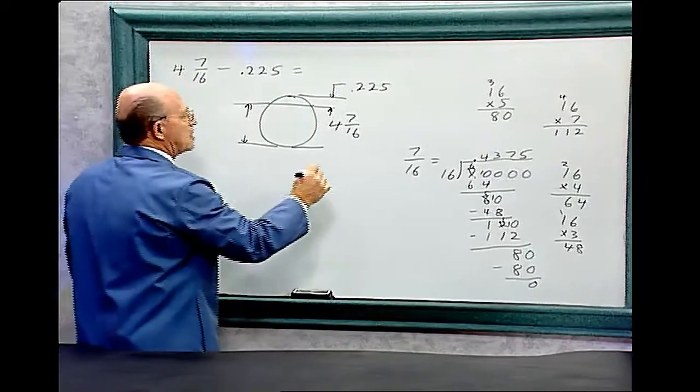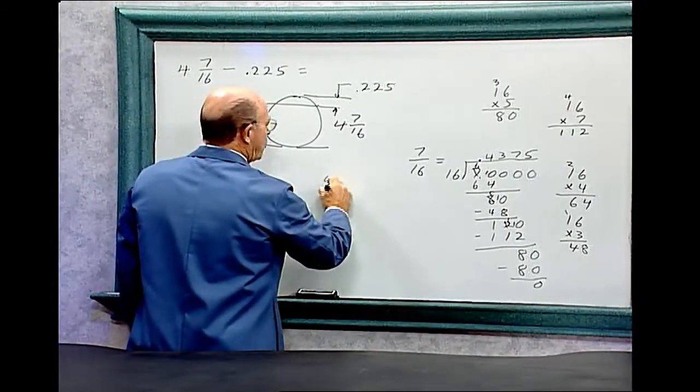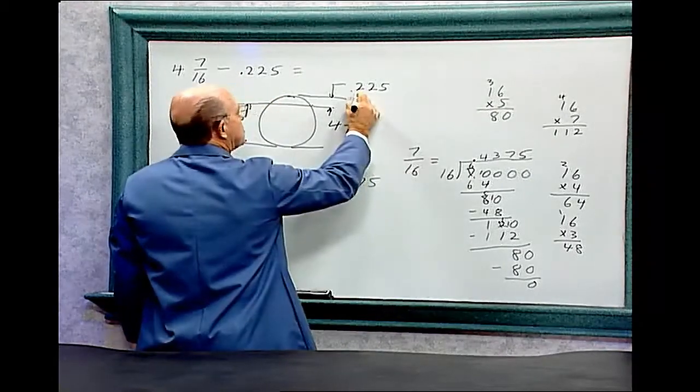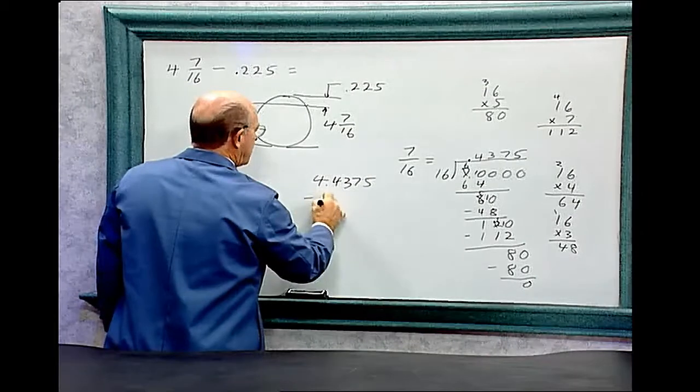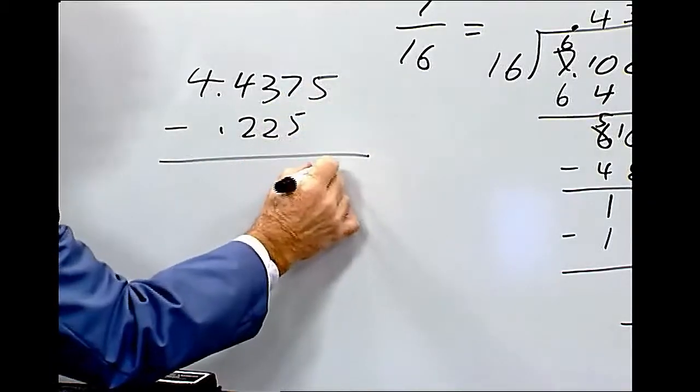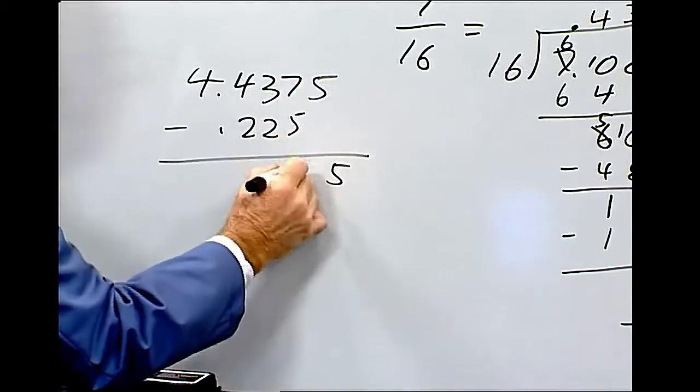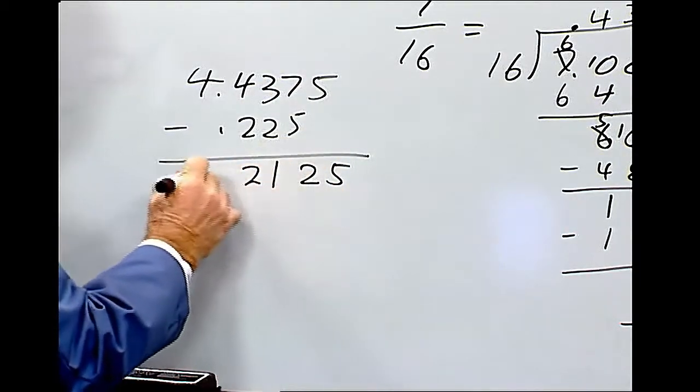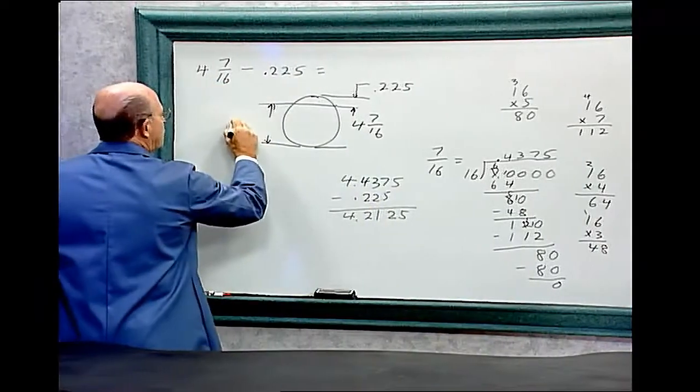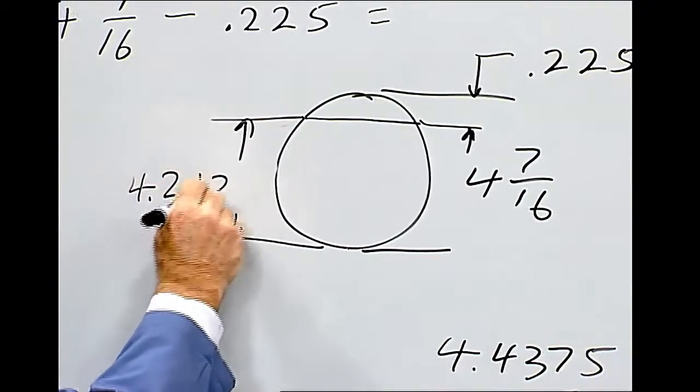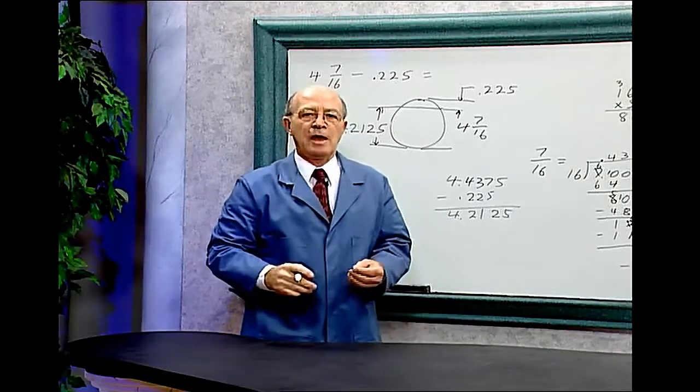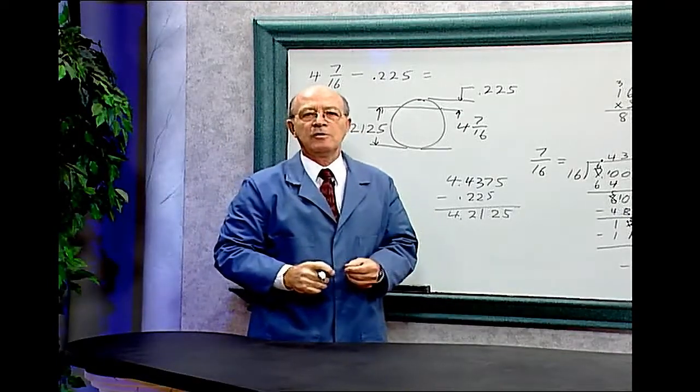Now we can subtract 4.4375. We can subtract this number, 225 thousandths, minus 0.225. And that will equal 4.2125. So this dimension then will be 4.2125. And so you can see it's important to know how to subtract decimals from fractions.